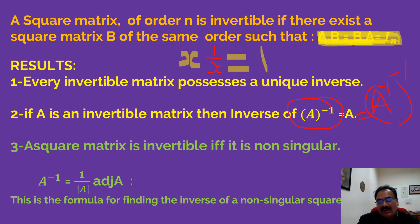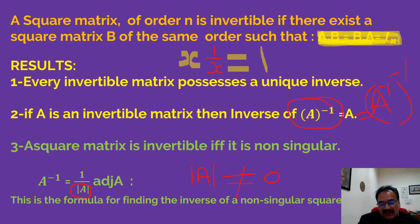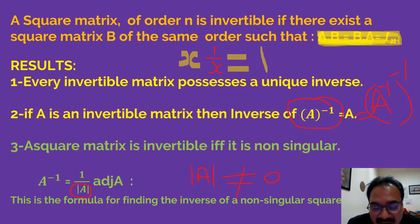A square matrix is invertible if and only if it is non-singular. Non-singular means the determinant of A must be non-zero. Singular matrices are those whose determinant is zero. So to find the inverse of a matrix, first check the determinant: if it is zero, you cannot find the inverse; if it is non-zero, then only can you find the inverse.